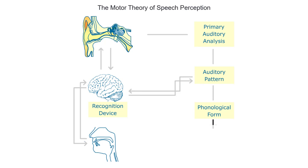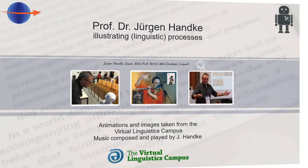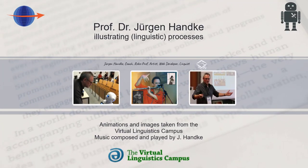At the end of the recognition process, phonological units — that is, phonemes or phonetic features — are extracted from the signal and are combined to form larger units.